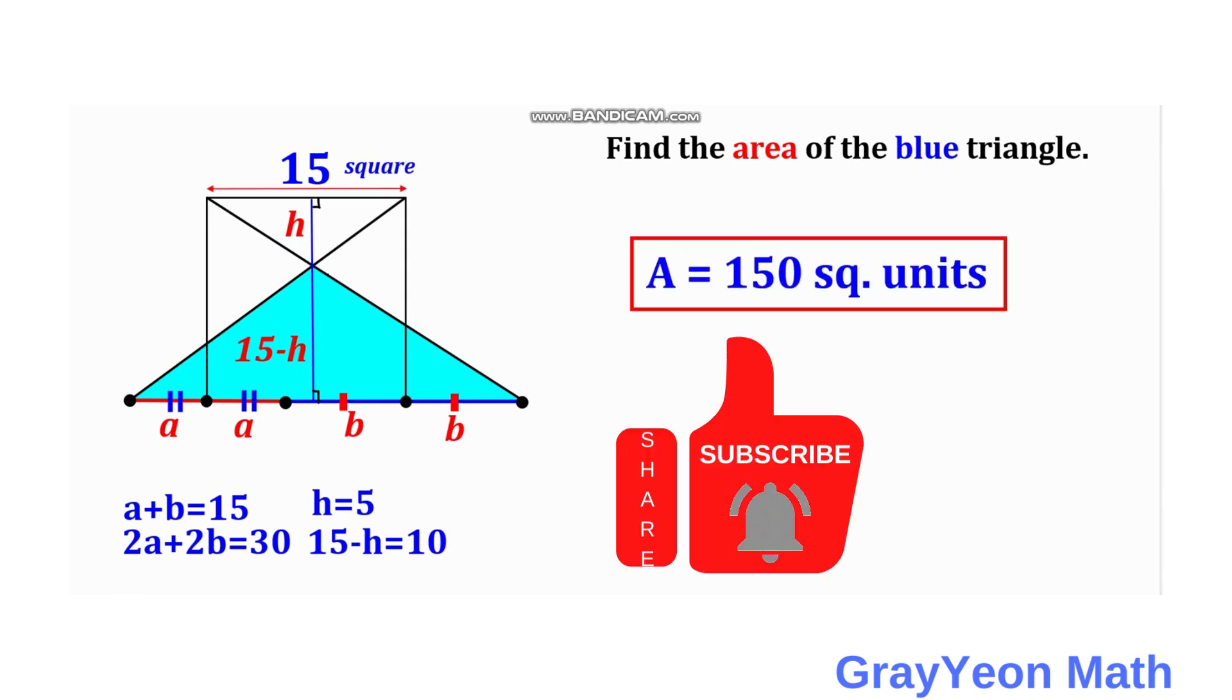So therefore, the area for this triangle is 150 square units. And that is our answer. So thank you for watching until the end of the video. Please like the video if you like our solution. And don't forget to subscribe to the channel and hit the bell icon so you will be updated for more math videos like this. Thank you. Bye.